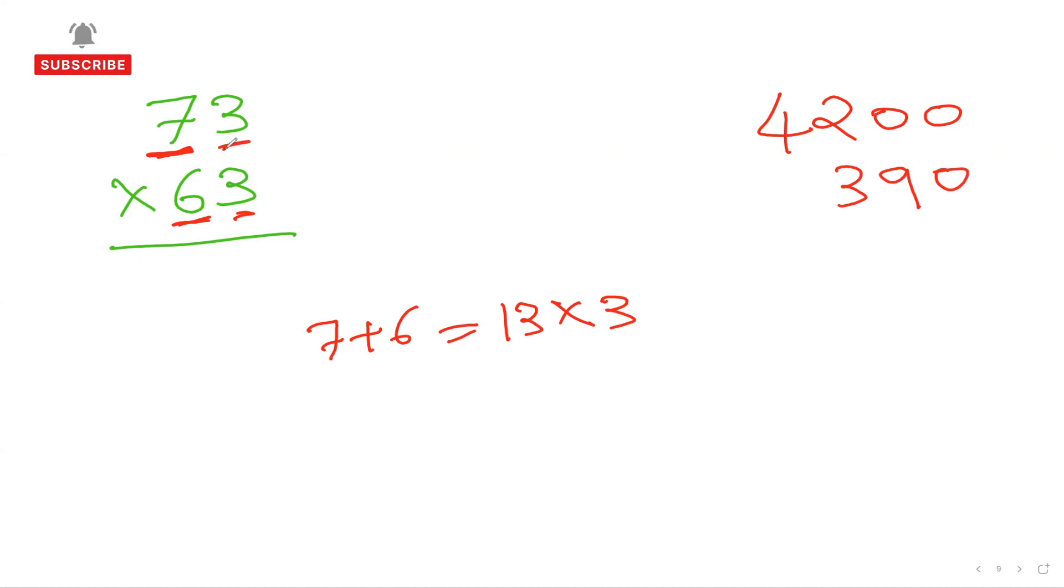And then at the end, I can multiply this last digit and last digit, which is three. Three times three is nine. And then I can add up everything, which is 9, 9, 5, and 4. So 4599 is my answer guys.